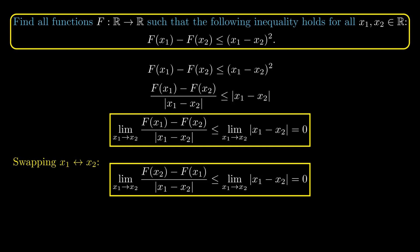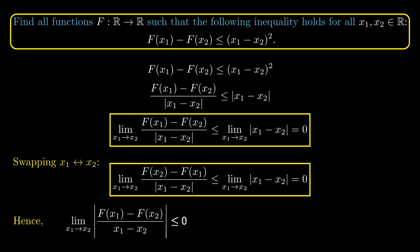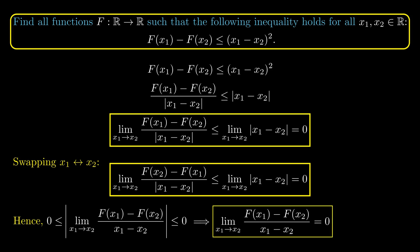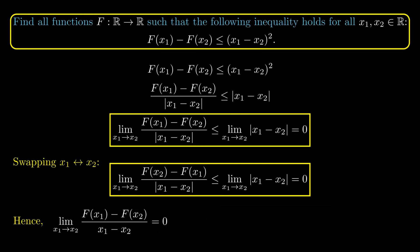We can combine these two inequalities into one: the limit of |f(x_1) - f(x_2)| / |x_1 - x_2| is less than or equal to zero. By basic properties of limits, we can push the limit inside the absolute value, so the absolute value of the limit is less than or equal to zero. But absolute values are always non-negative, so the quantity must equal zero. This means the limit as x_1 → x_2 of (f(x_1) - f(x_2)) / (x_1 - x_2) equals zero — so the derivative of f at x_2 exists and equals zero.